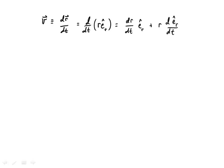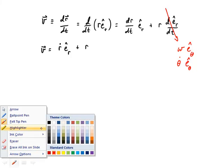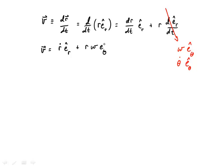So r dot is a measure of how the length, or the distance, from the origin is changing with respect to time. My velocity might be written as r dot e sub r hat, plus r. Now the derivative of e sub r hat is going to be very much the same as the derivative of e tangential, that is to say the derivative of e sub r hat is going to be omega times e sub theta hat, or theta dot if you prefer, times e sub theta hat. That's a measure of how the angle with respect to the positive x axis is changing with respect to time. So this would be r omega e sub theta hat.